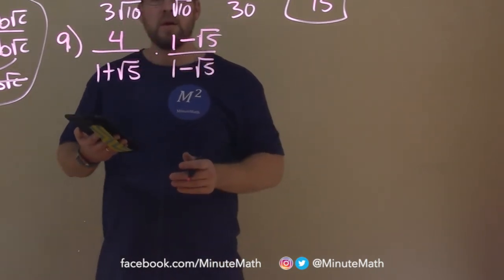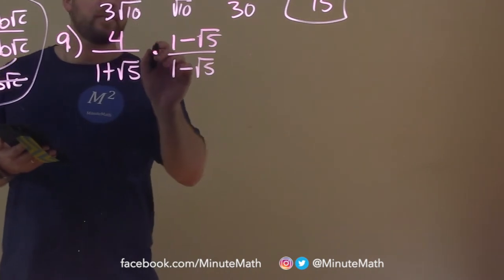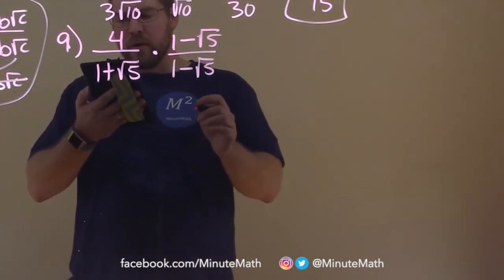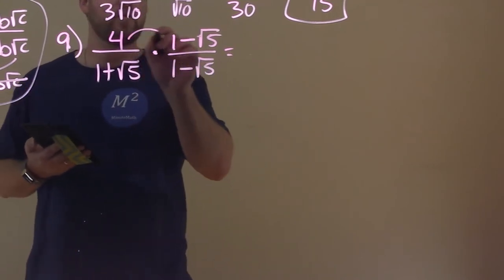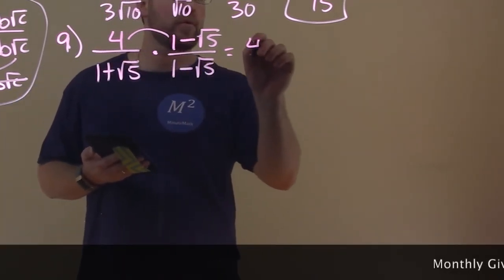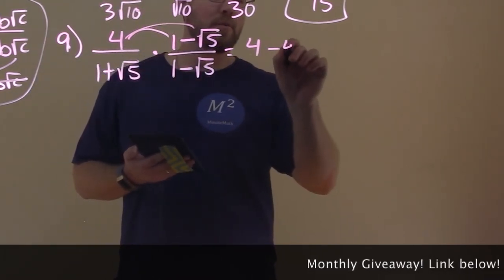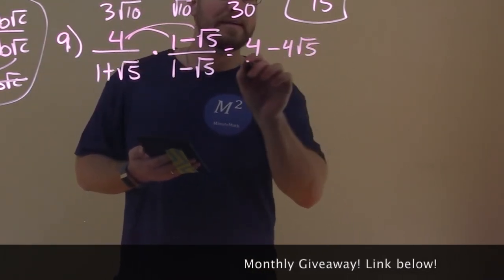So now we want to multiply this out. So this becomes a little tricky. Let's deal with the numerator first. 4 times the 1, make sure we distribute. 4 times 1 is 4, and 4 times the minus square root of 5 is minus 4 square root of 5. Not too bad.